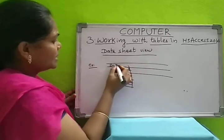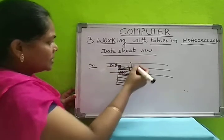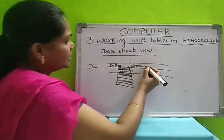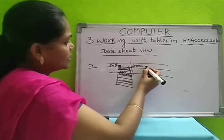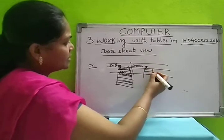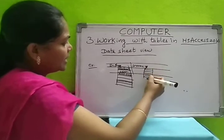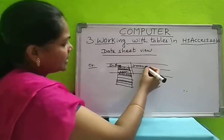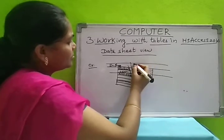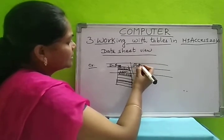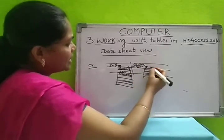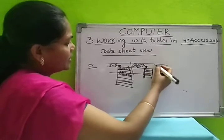It will be assigned to that column name. For student name, I have selected text. You can select text from the dropdown box — different data types are there. On top you will get 'Add Field' — whenever you want to add a field, click on that, enter the field name, and select the data type.